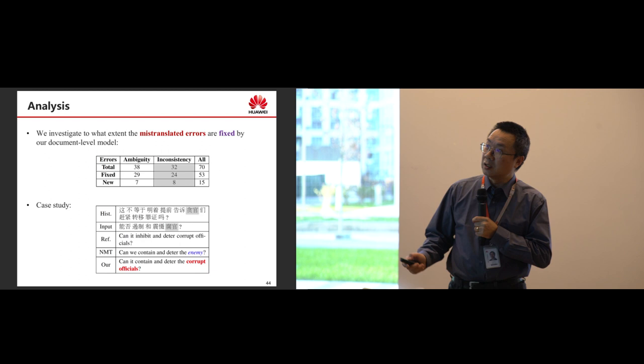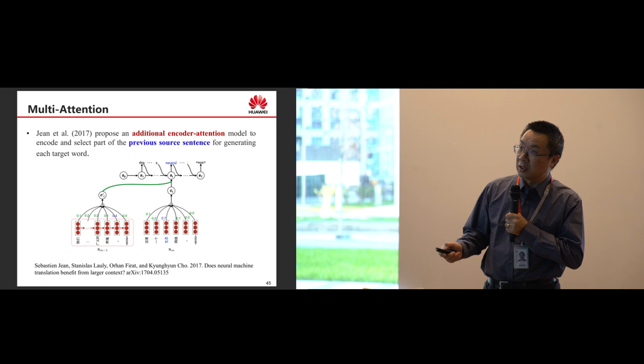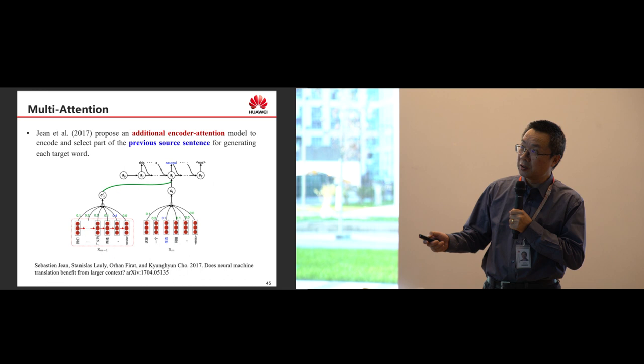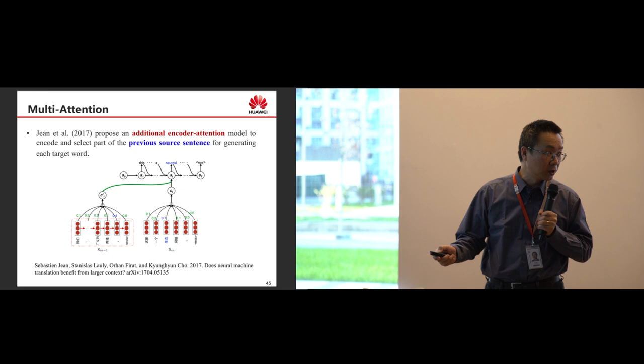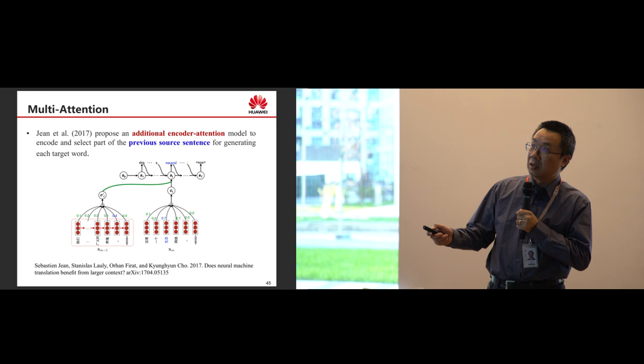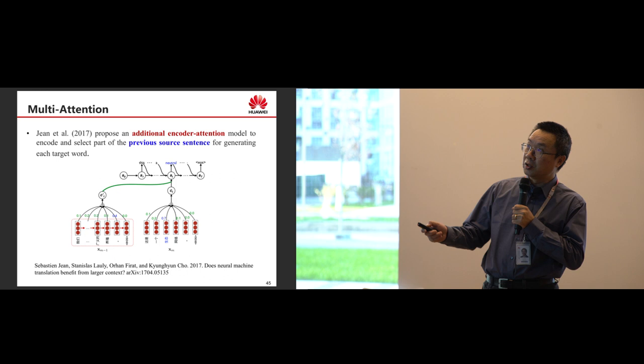There are also other works on this topic. One uses multiple attention: they use an additional recurrent neural network encoder for the history sentences and generate hidden states for each word. In addition to the standard attention, they use another attention model to generate the current word.